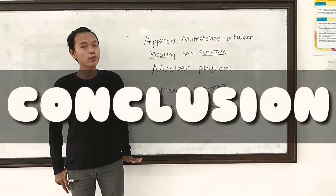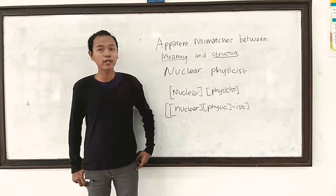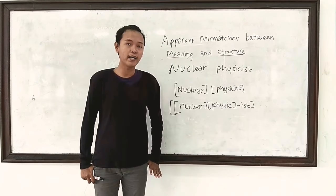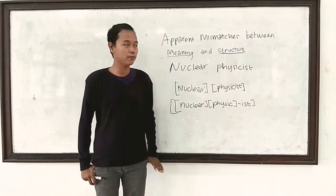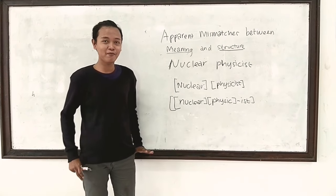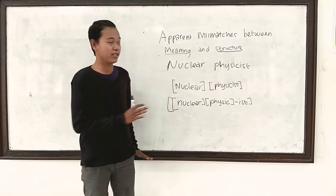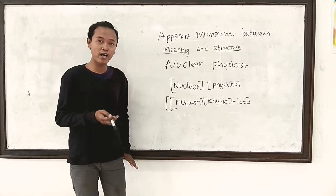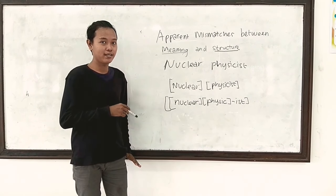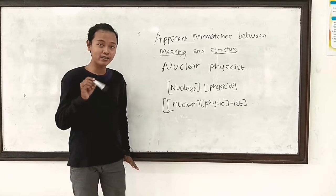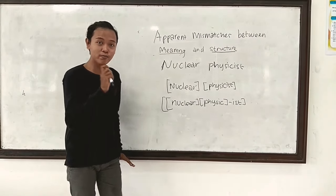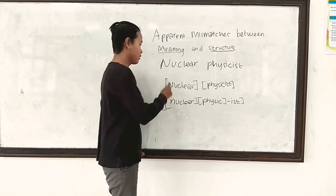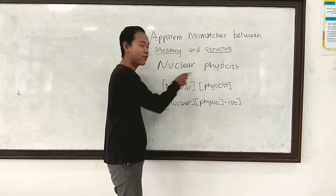Now we're going to move to the differences between meaning and structure. When we make a phrase or a sentence, we sometimes find it difficult because there are differences between meaning and structure. So how do we find out which one is the right meaning? The answer is we use brackets and parentheses. For example, consider the phrase 'nuclear physicist.'